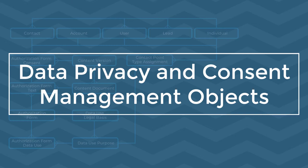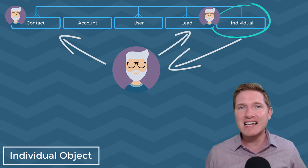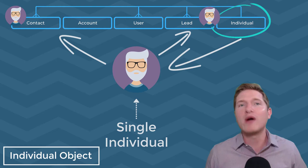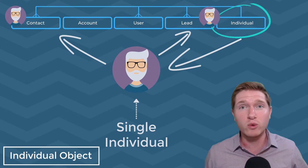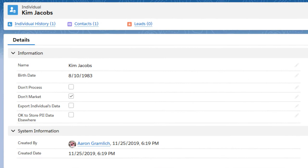With that, let's get to the objects themselves. Debatably, the most important of these objects is the individual object. This object was introduced as a parent to your out-of-the-box contact, lead, and user objects, and is meant to act as the connective tissue between multiple records representing the same person. This would be the case if you have duplicate records, or multiple contact records for a single person because you have multiple divisions within your company.